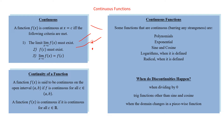So where discontinuities happen — it's where weirdness happens: dividing by zero, and trig functions other than sine and cosine, which really is just dividing by zero. If you think about tangent, tangent is just sine over cosine, and when cosine equals zero we're dividing by zero and a discontinuity happens — same with the other three trig functions. And then when the domain changes in a piecewise function, it's possible the limit doesn't exist.